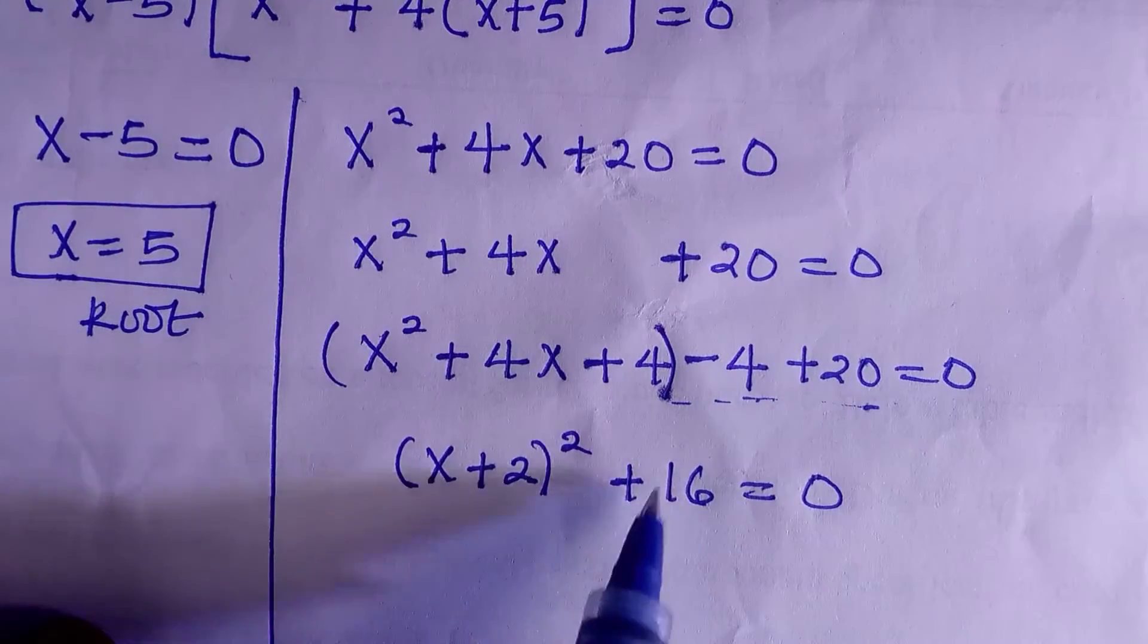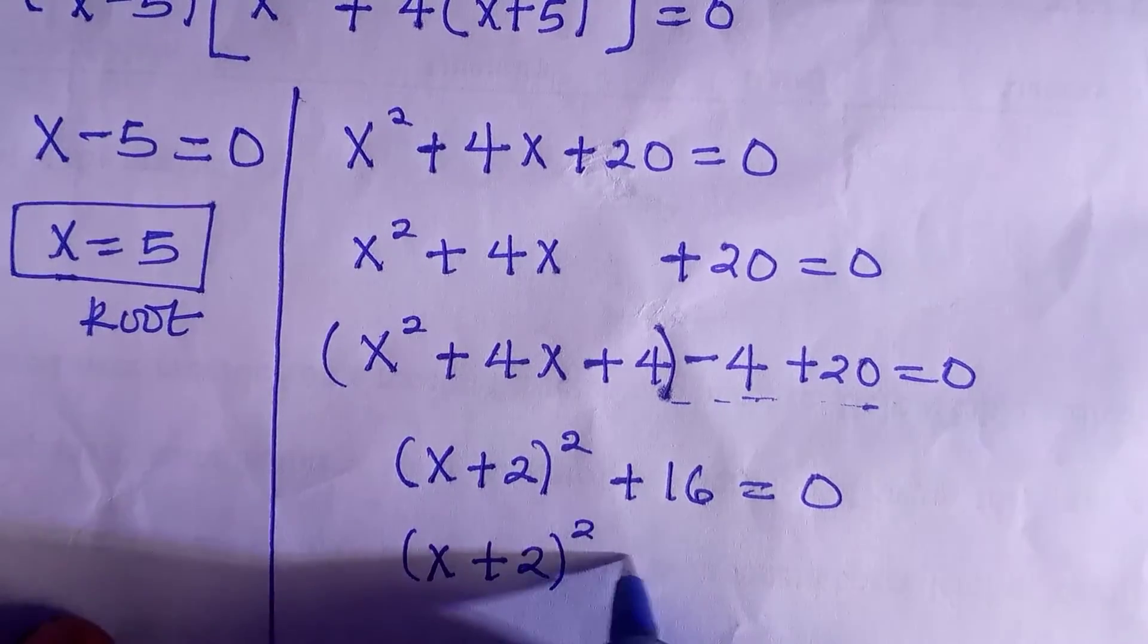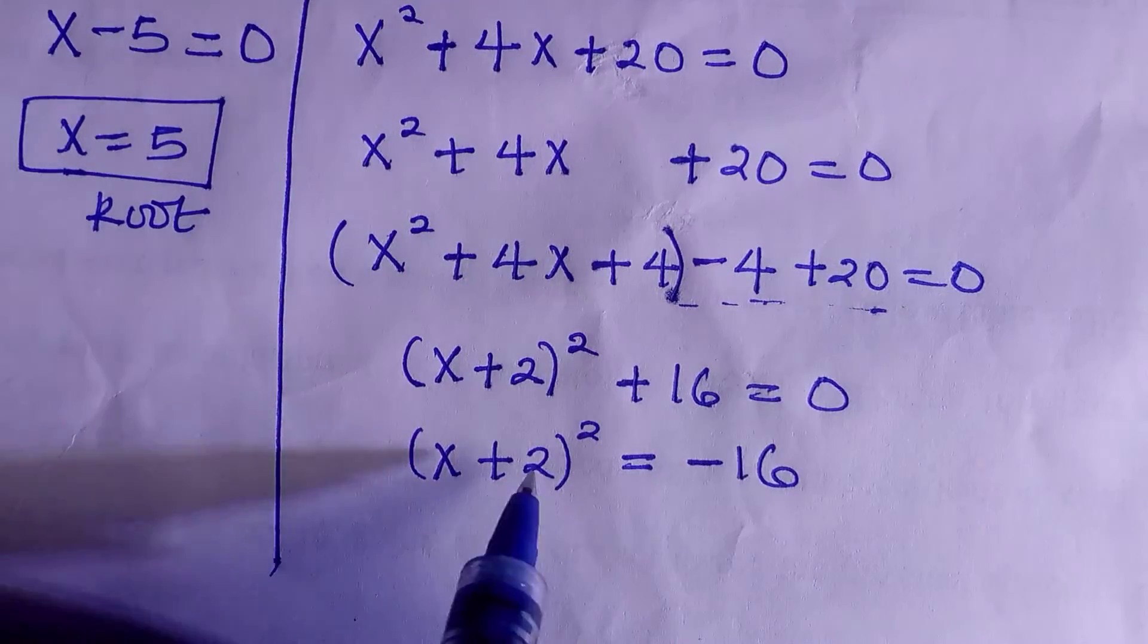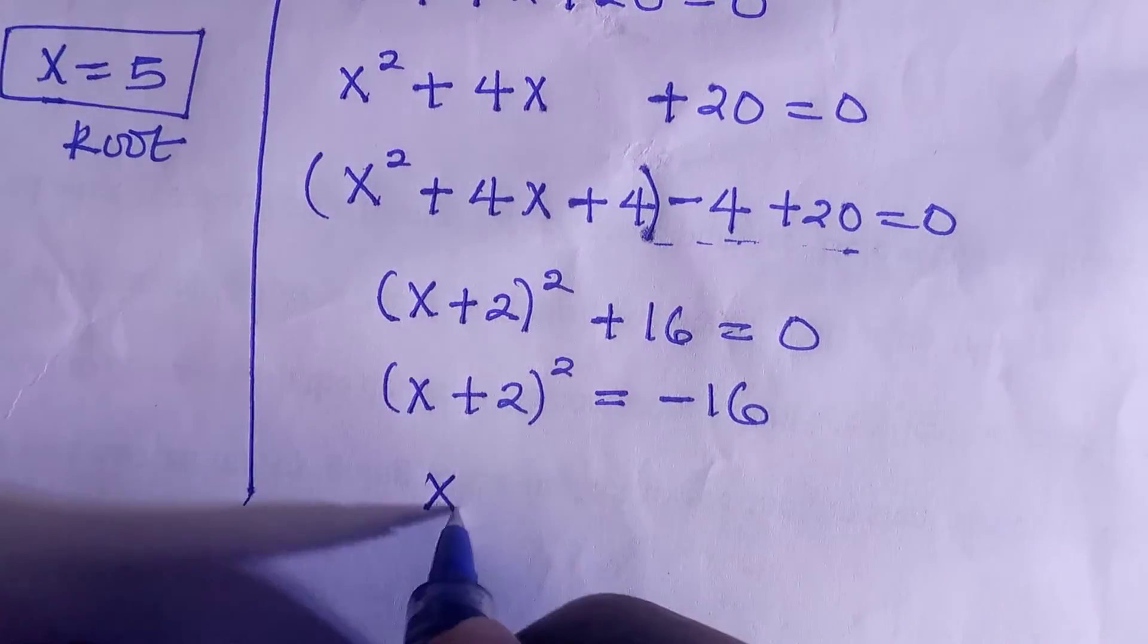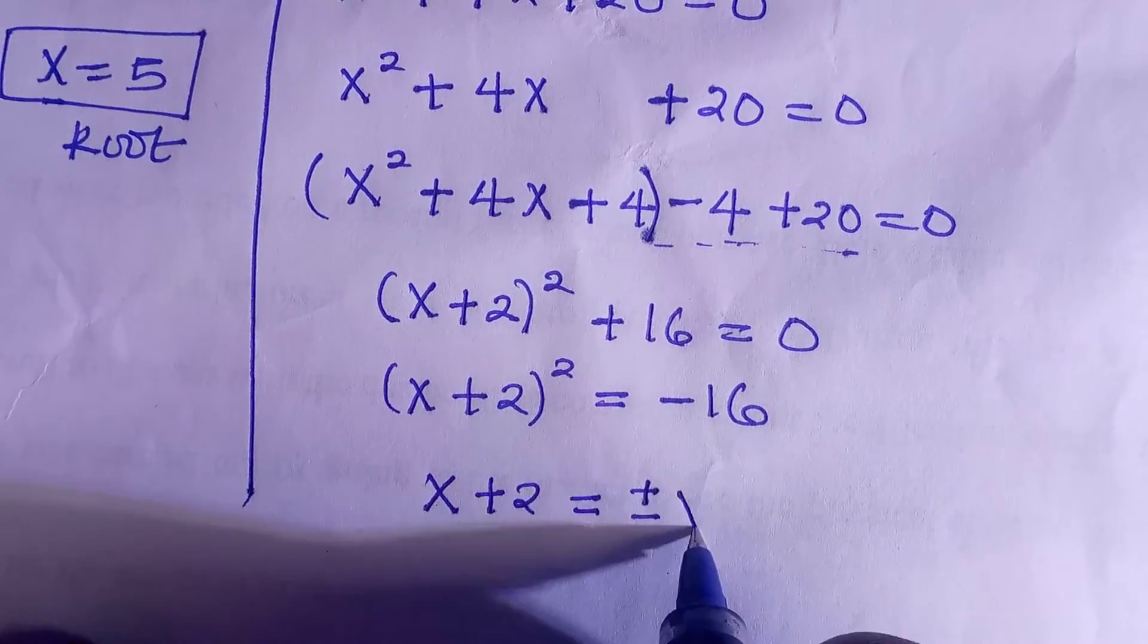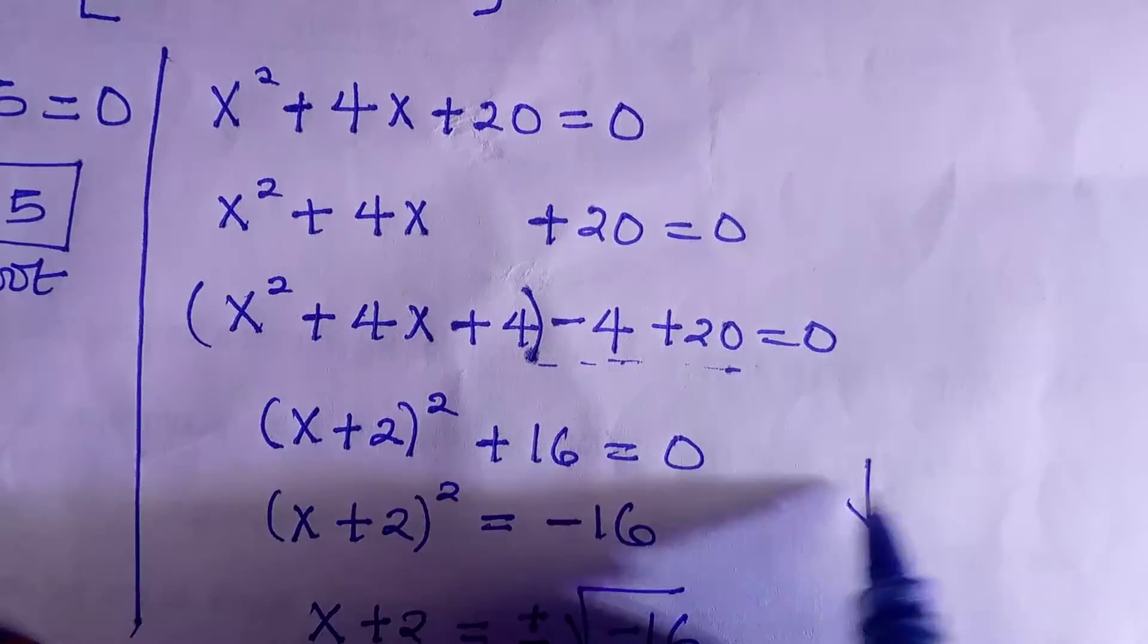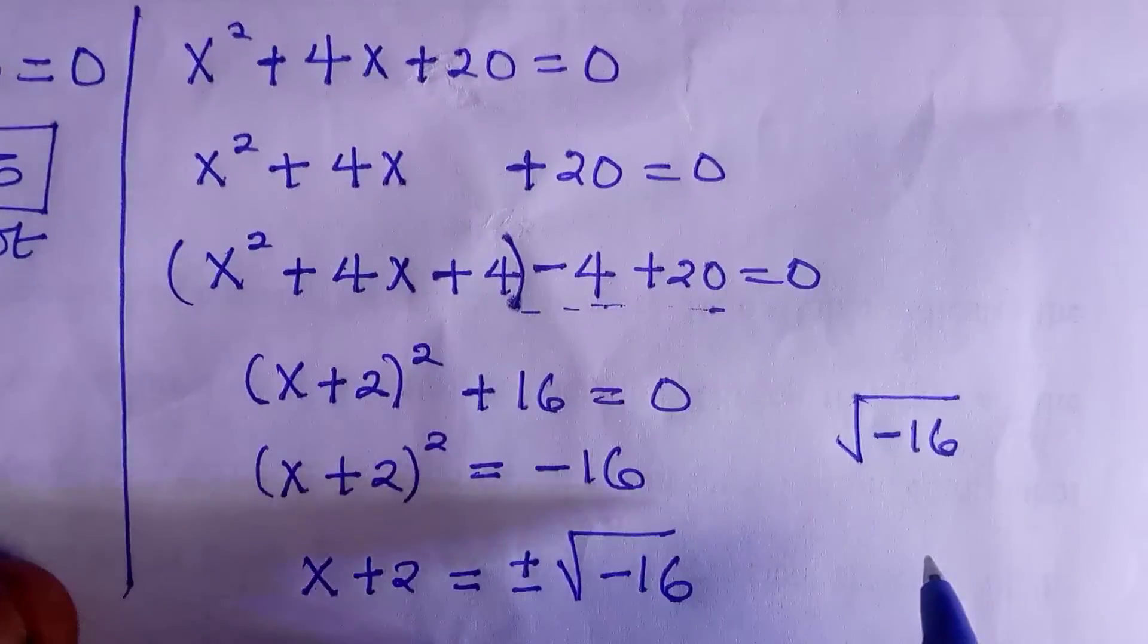Then by taking 16 to other sides, it changes to negative. And here we have x plus 2, everything raised to power 2, equals to minus 16. And by taking the square root of both sides to cancel the square, here we have x plus 2, everything equals to plus or minus the root of negative 16. But don't be confused. If you press the root of negative 16, it will give you error. But there is a way out.